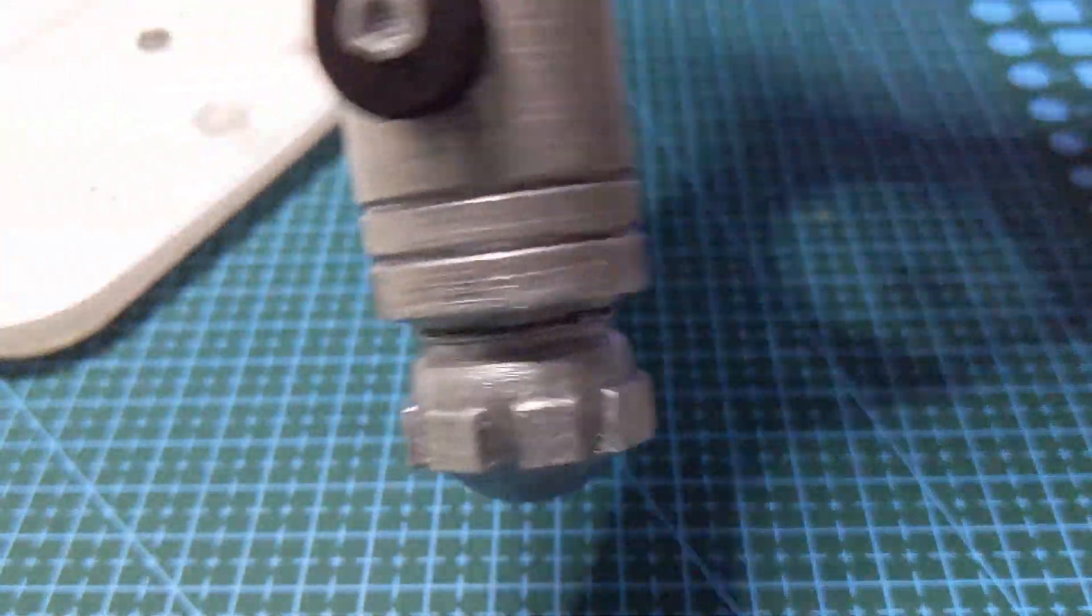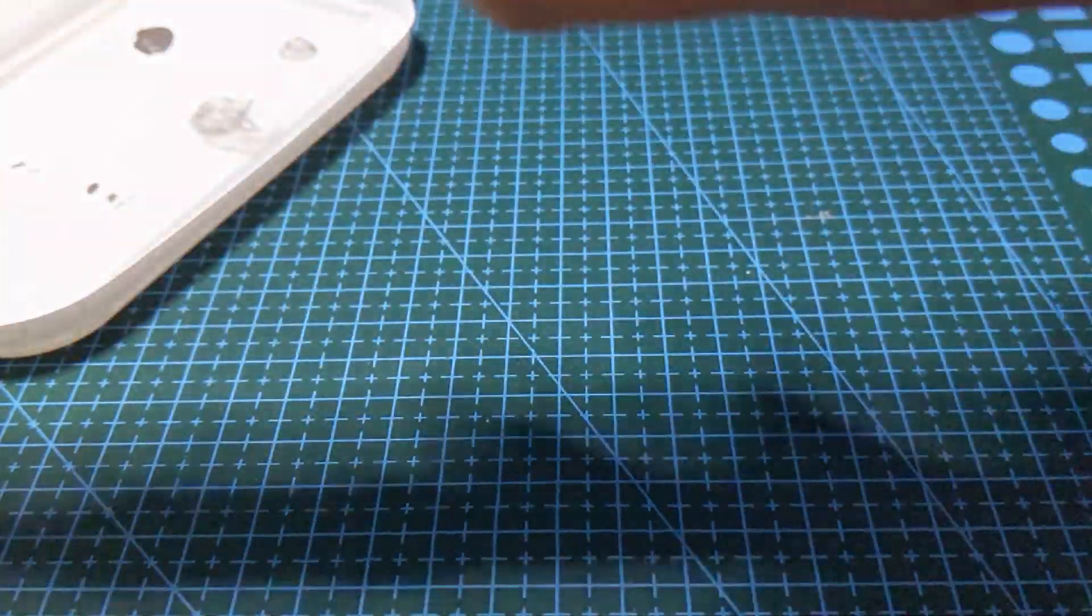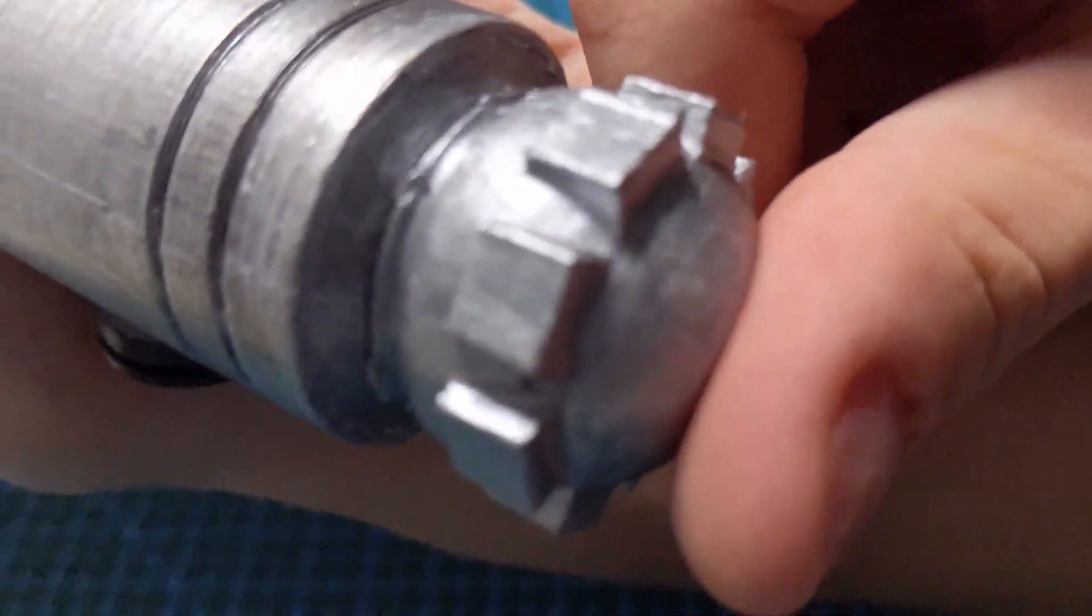So I just super glued it back together at the proper angle. It's made the lightsaber slightly wonky, but I don't know if that matters too much. But it is worth it for the buttons to be on the opposite sides.